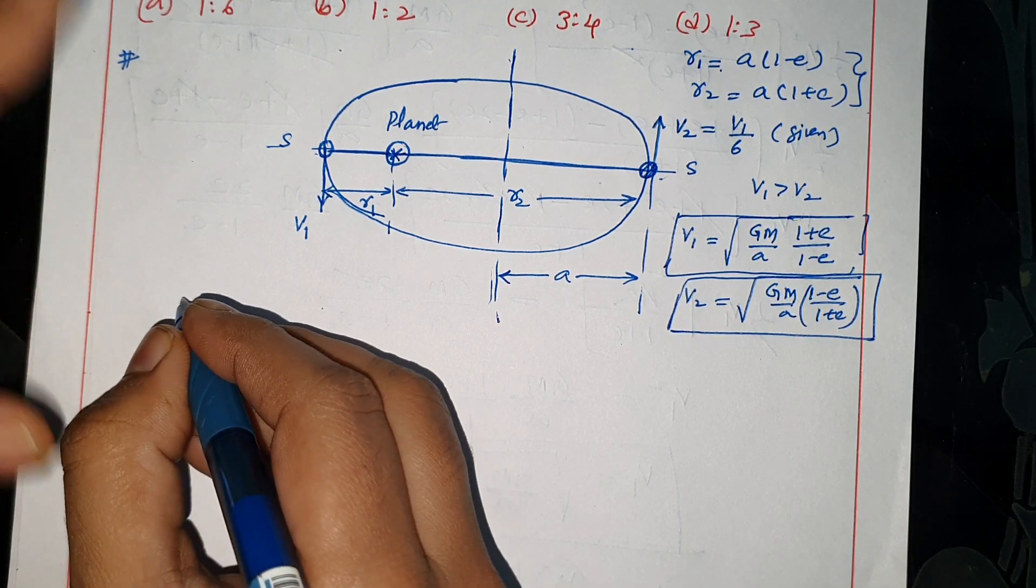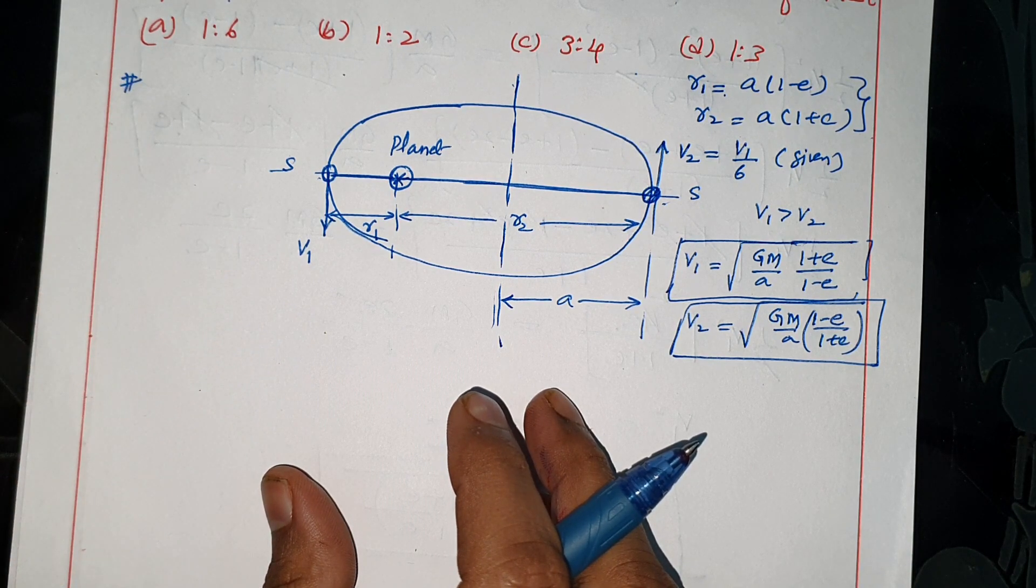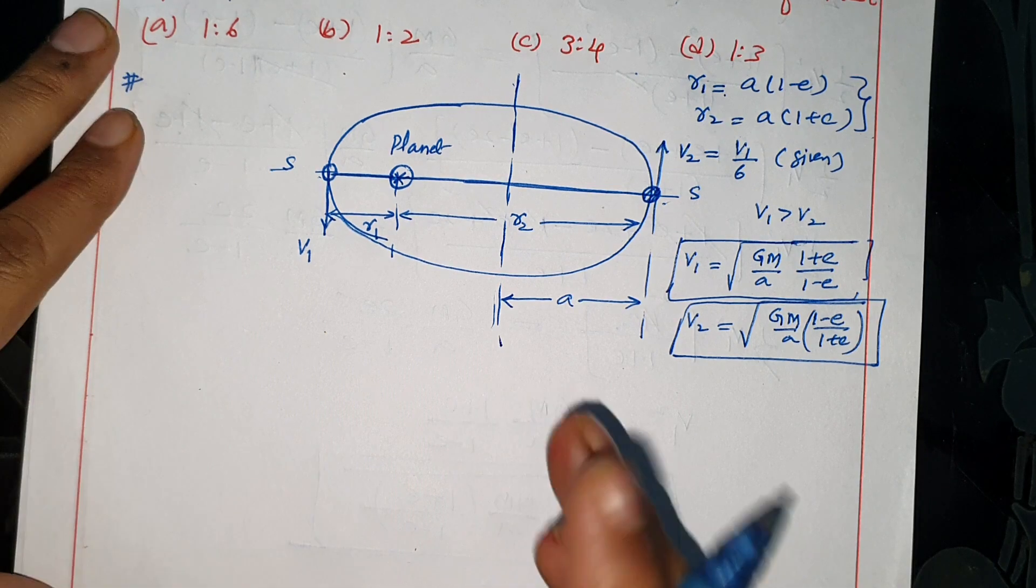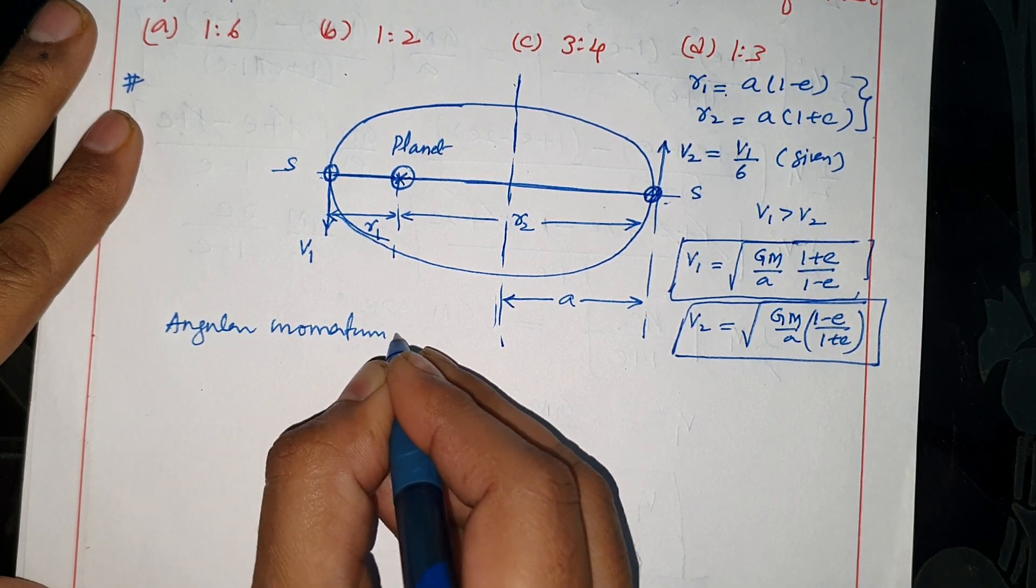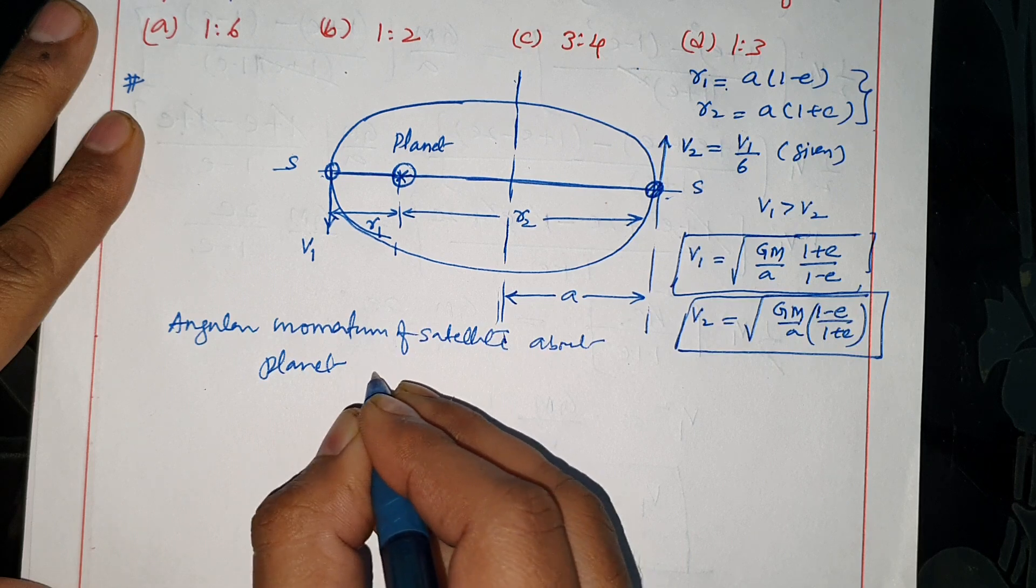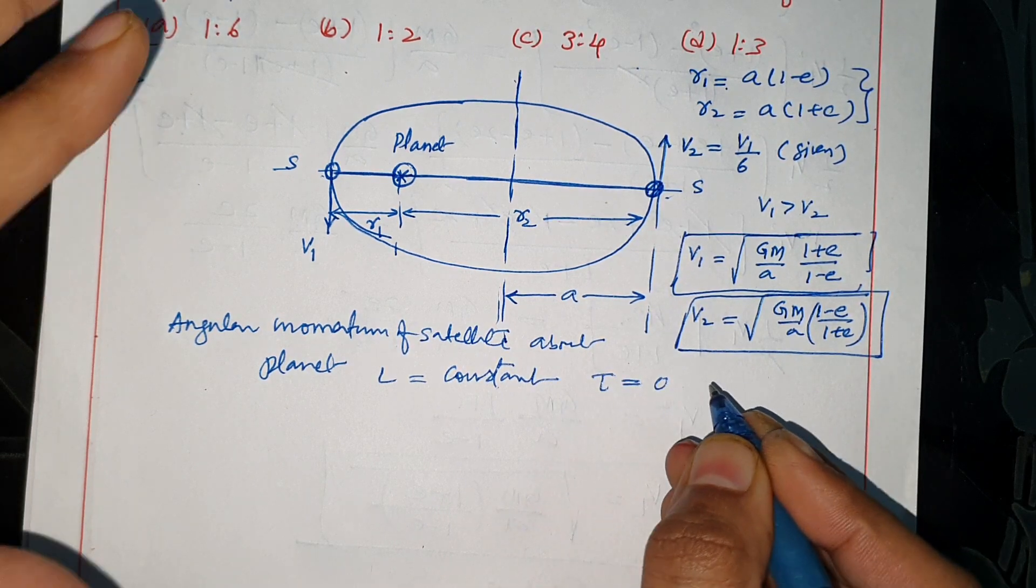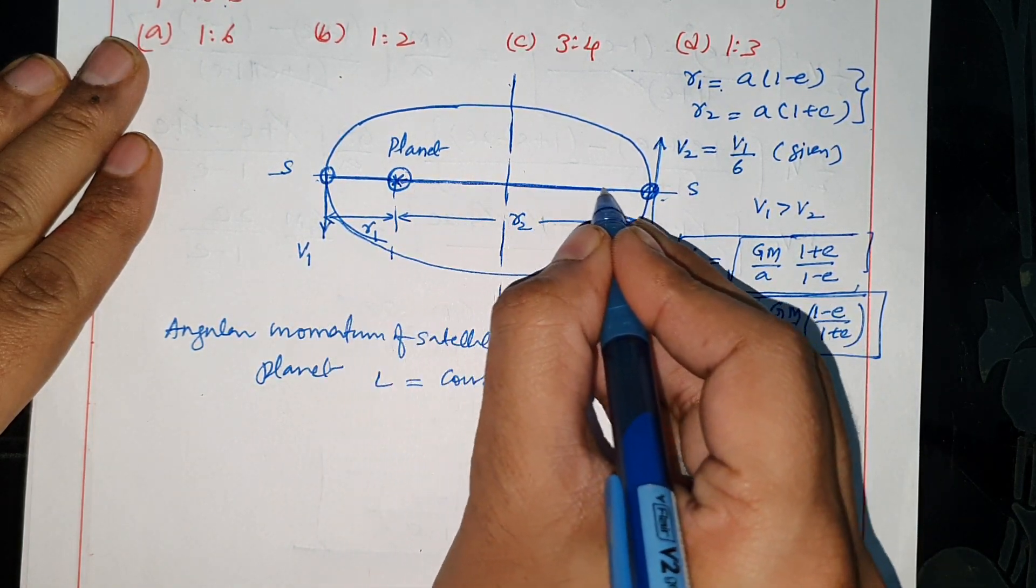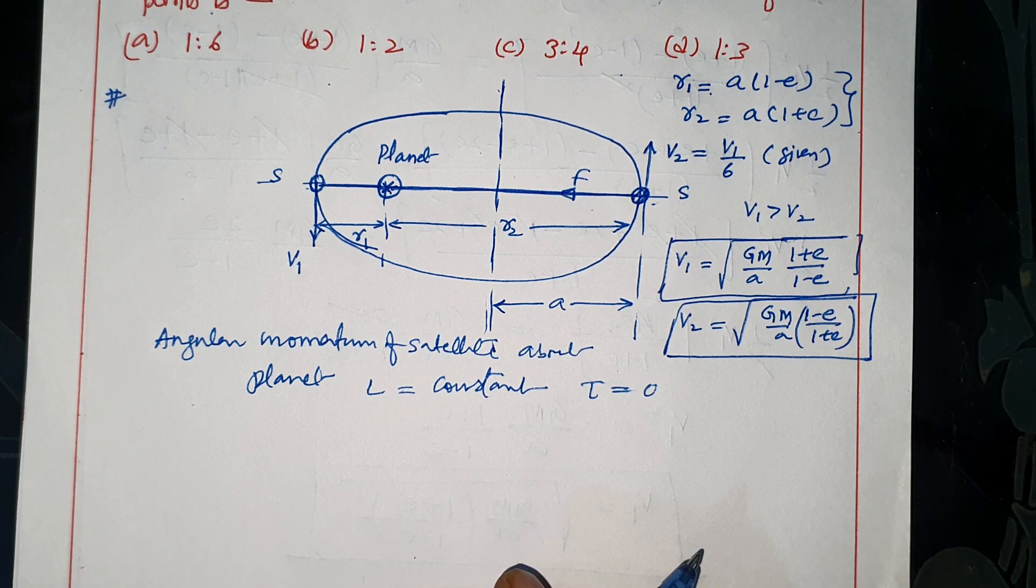The angular momentum is conserved. When you have a satellite in orbit around a planet, then there are two quantities conserved, one is angular momentum. The angular momentum of the satellite about the planet is constant because external torque is zero. If the torque is zero, then the angular momentum is constant.